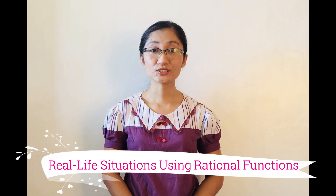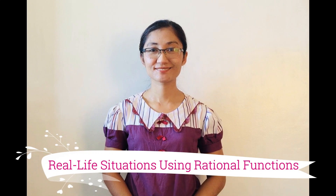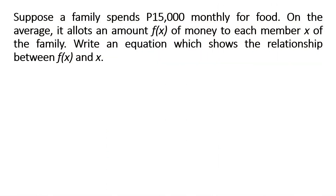In real life, we use rational functions though it may go unnoticed. So let's consider these cases. Suppose a family spends 15,000 pesos monthly on food. On the average, it allots an amount f(x) of money to each member x of the family. The independent variable is x, the number of family members, while the dependent variable is f(x), the amount of money spent on food for each family member. Note that as the number of family members x increases, each member's share f(x) decreases.